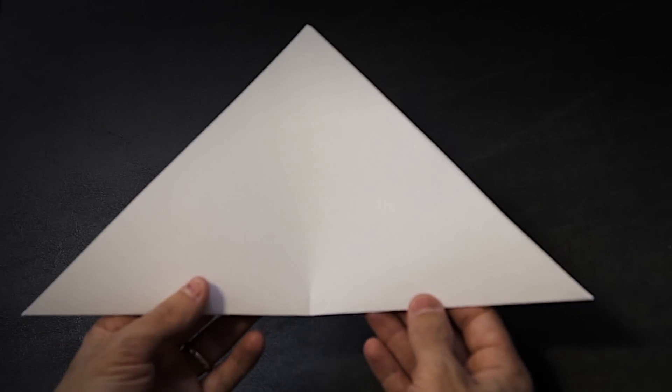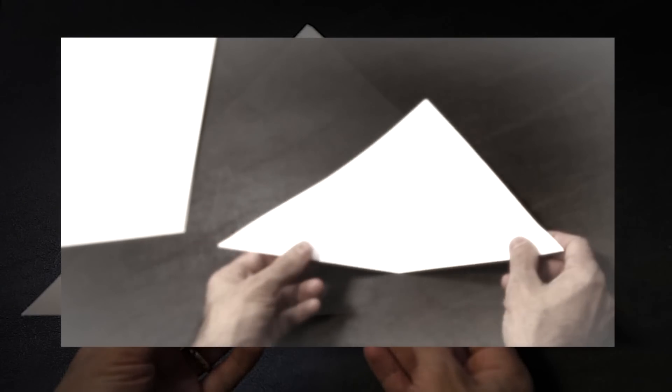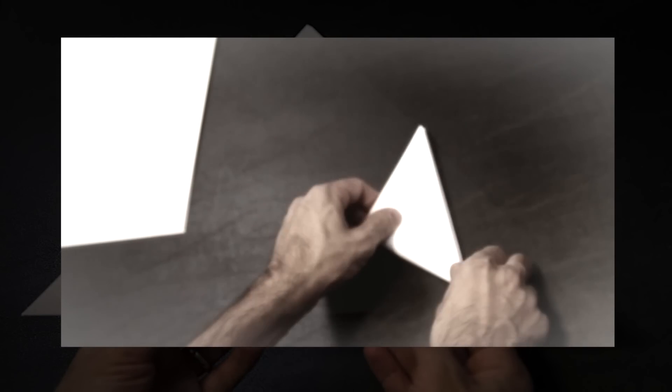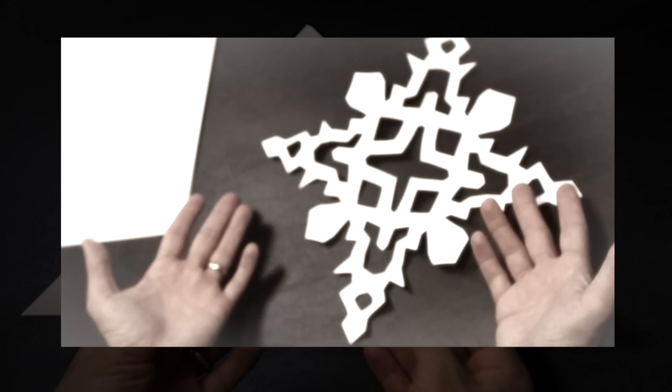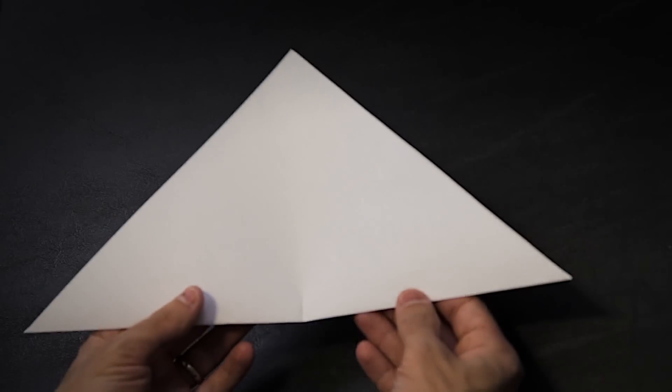At this point you could make a simple square snowflake by folding the two outer corners together, folding again and then cutting shapes. But we want to make a fancy six-sided snowflake.